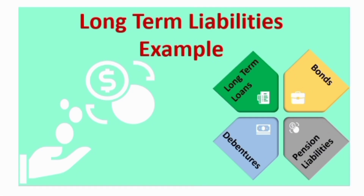The next type is long-term liabilities. Examples of long-term liabilities include bank loans, debentures, and pension liabilities. For example, you might borrow a fixed loan for 5 years or 10 years — this would appear on the balance sheet as a long-term liability.